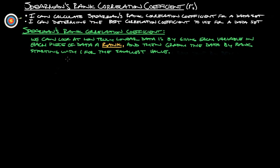So first things first, Spearman's Rank Correlation Coefficient. What we can do is we can look at how truly linear data is by giving each variable in each piece of data a rank, and then graph the data by rank, starting with one for the smallest value.